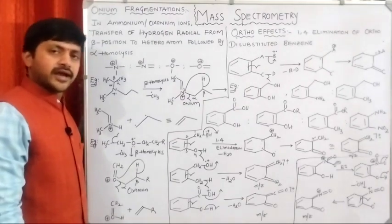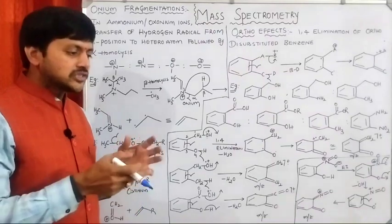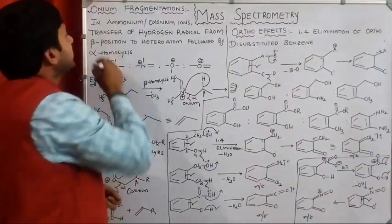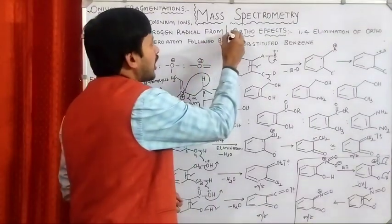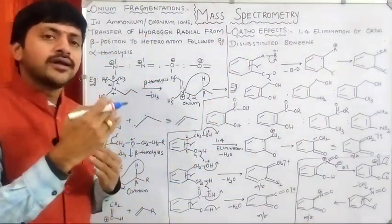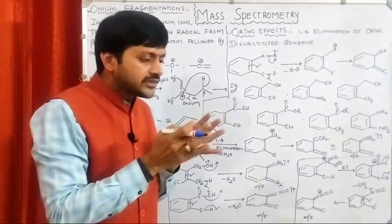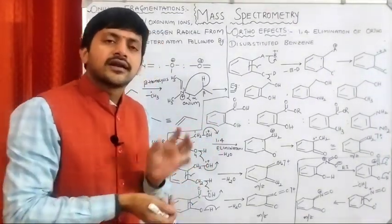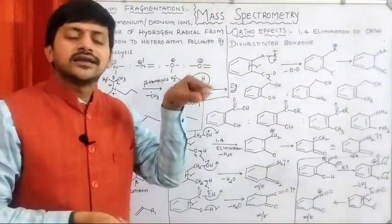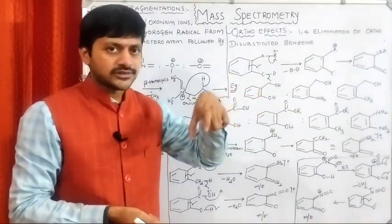Hello everyone, welcome back to our channel. Dear aspirants, in this particular video, we are going to have a discussion on onium fragmentations and ortho effects. In the last video, we had a discussion on McLafferty fragmentation. McLafferty fragmentation means transfer of hydrogen radical from gamma position to the unsaturation, followed by C-alpha-beta homolysis.